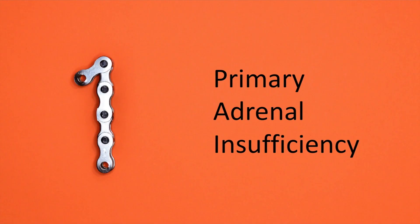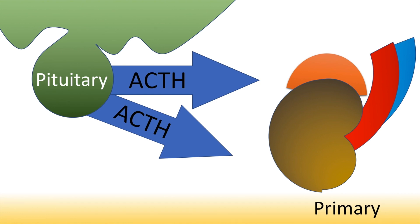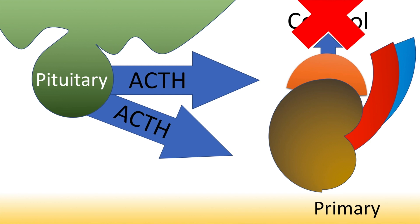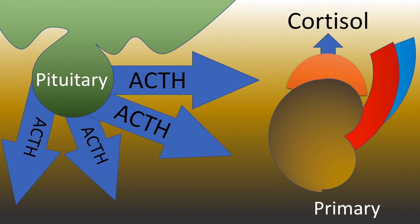Let us move on to adrenal insufficiency. Primary adrenal insufficiency is a disease of the adrenal gland itself. In this disease, the pituitary is secreting more and more ACTH but the adrenals do not release cortisol. In response, the pituitary secretes more ACTH and still the adrenals do not release cortisol, and the pituitary continues this effort of secreting more and more ACTH to kick-start the adrenals but there is no cortisol.